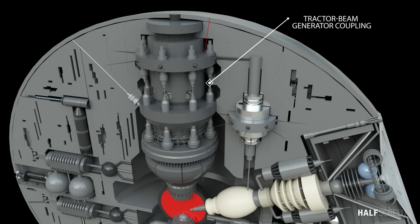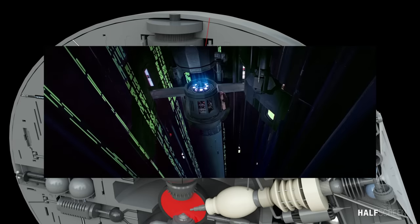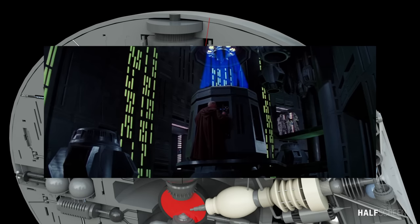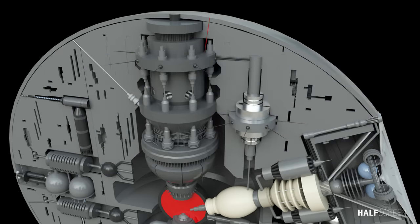The tractor beam power generator trench was one of seven locations where tractor beam was connected to the Death Star reactor. It was where Obi-Wan Kenobi severed the connection, allowing the Millennium Falcon to escape. The entry area to the corridor was guarded by two stormtroopers, but Kenobi distracted them with the force.